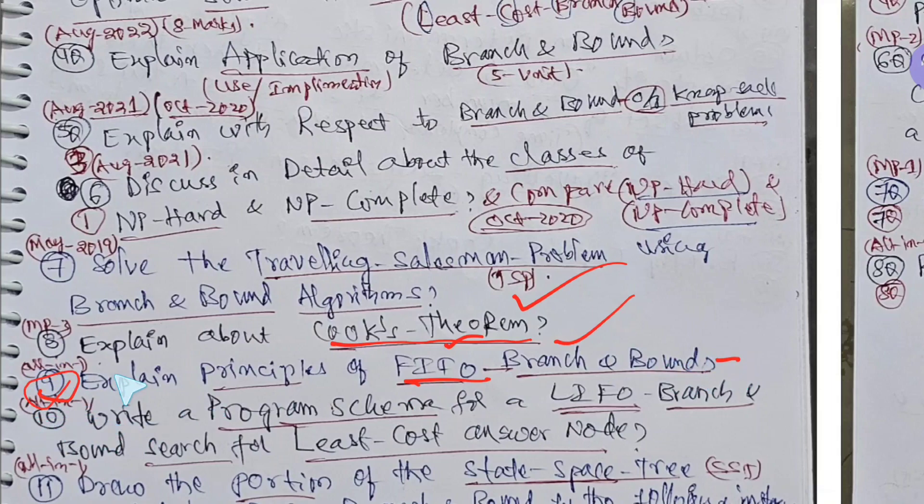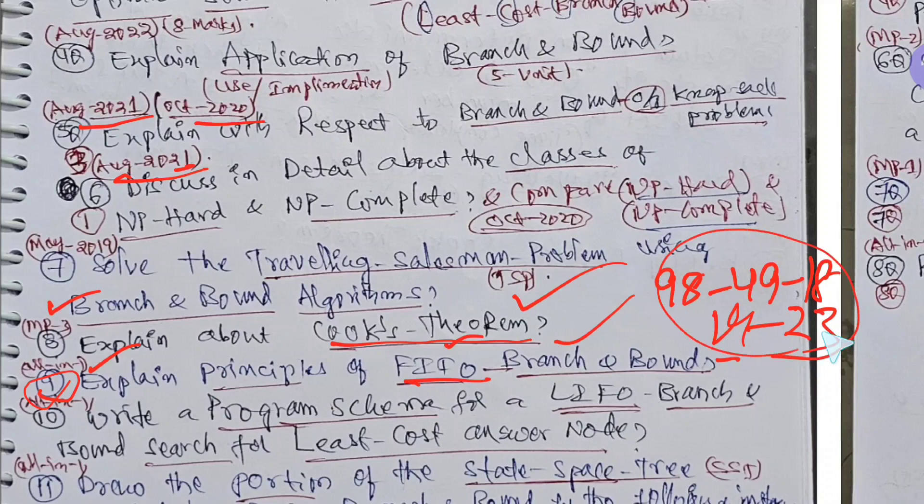Explain principles of FIFO branch and bound, this was not suited. Ninth question, all-in-one important question. These are previously asked question paper questions. FIFO branch and bound, this material I have. I will give you my mobile number if you have any doubts, WhatsApp me. Ping me so that I will give you material, 9849181923 is my mobile number.